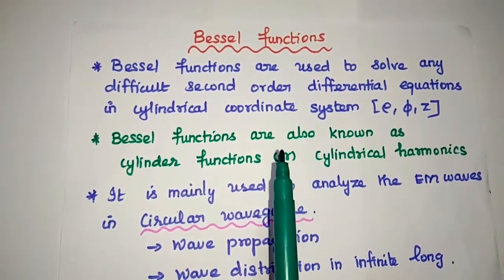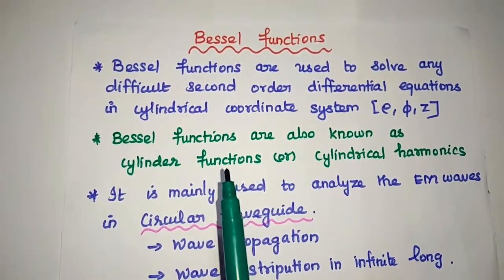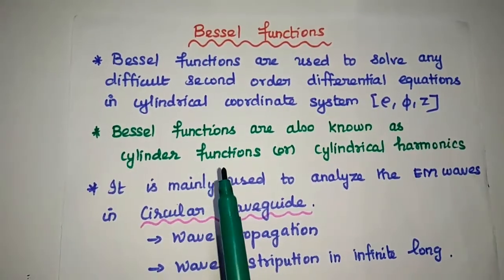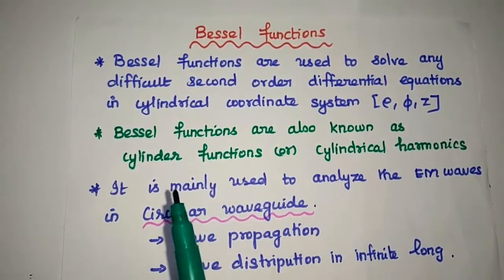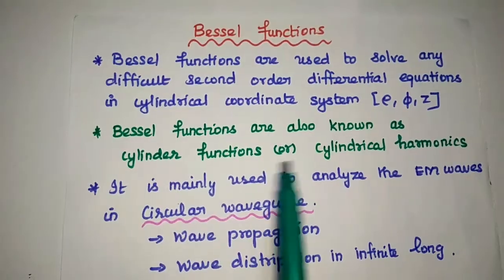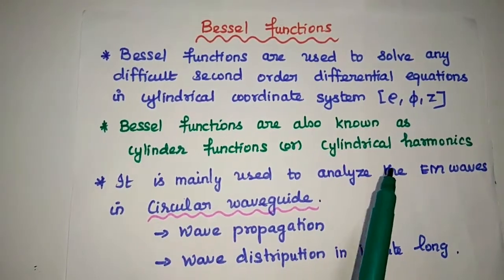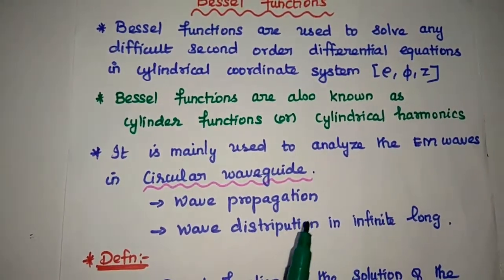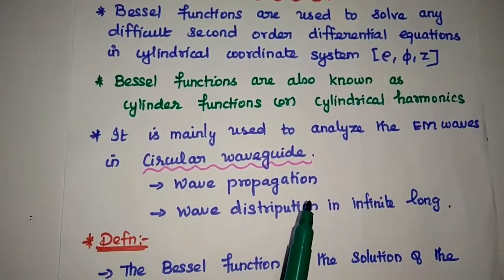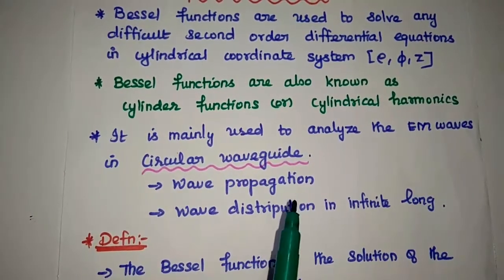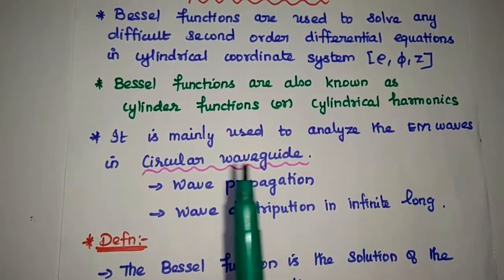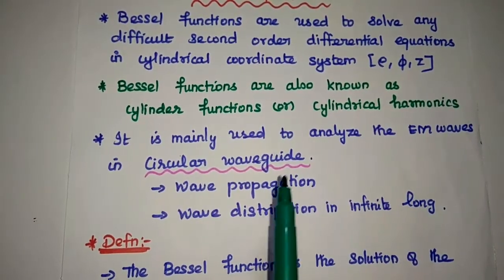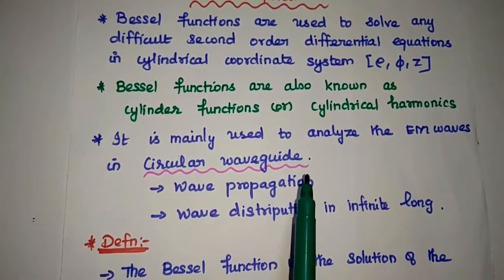In that case, we can use Bessel functions. Bessel functions are also known as cylinder functions or cylindrical harmonics. They are mainly used to analyze electromagnetic waves in circular waveguides. A circular waveguide can be analyzed using the cylindrical coordinate system.